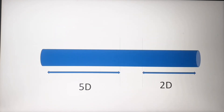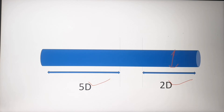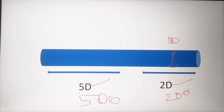That is why people follow the 5D-2D concept. Even if there is a bend, you have to offset the PT meter from the bend or T. Here, D is the diameter of the pipe. For example, if D is 100 mm, then 5D is 500 mm and 2D is 200 mm. So you multiply D by 5 or 2 accordingly.